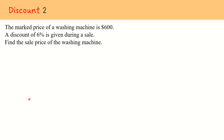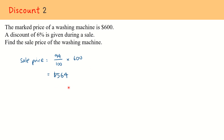Therefore, in our calculations, we find the sale price to be 94%, which is 94 over 100 times $600, giving us $564. And that is our answer for the sale price.